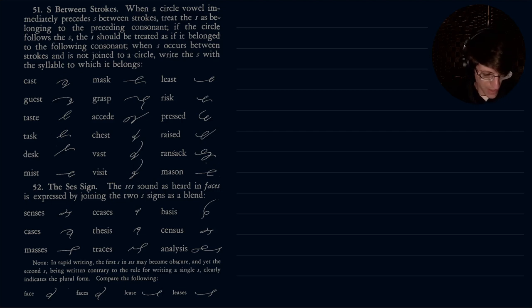So here we go. Here is section 51. This is S between strokes. When a circle vowel immediately precedes S between strokes, treat the S as belonging to the preceding consonant. If the circle follows the S, the S should be treated as if it belongs to the following consonant. Okay, so let's take a look at this.